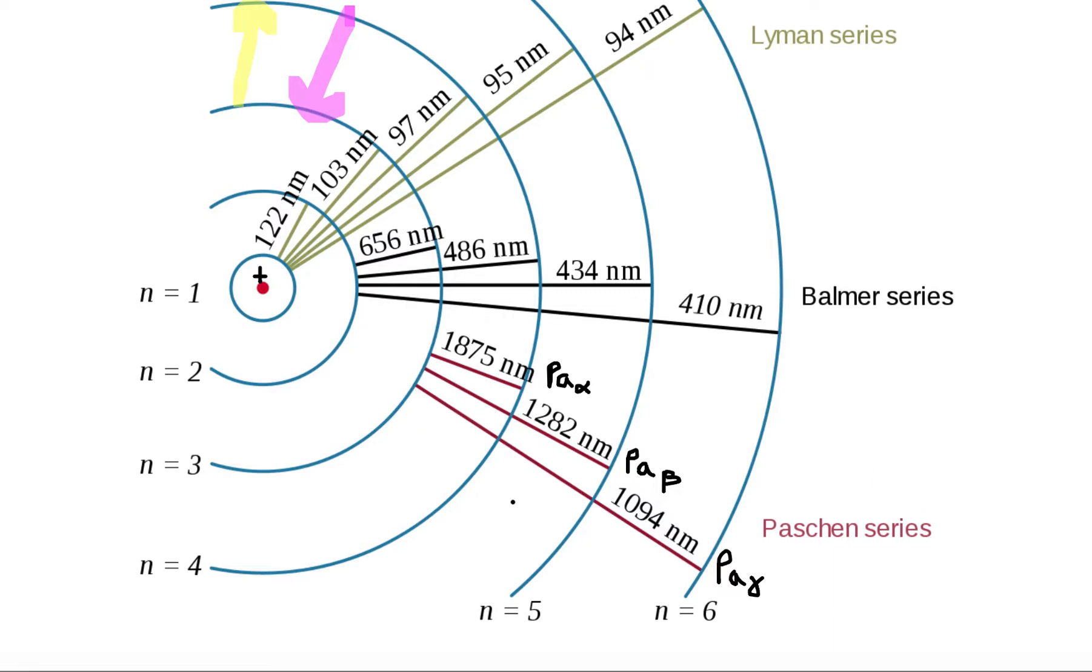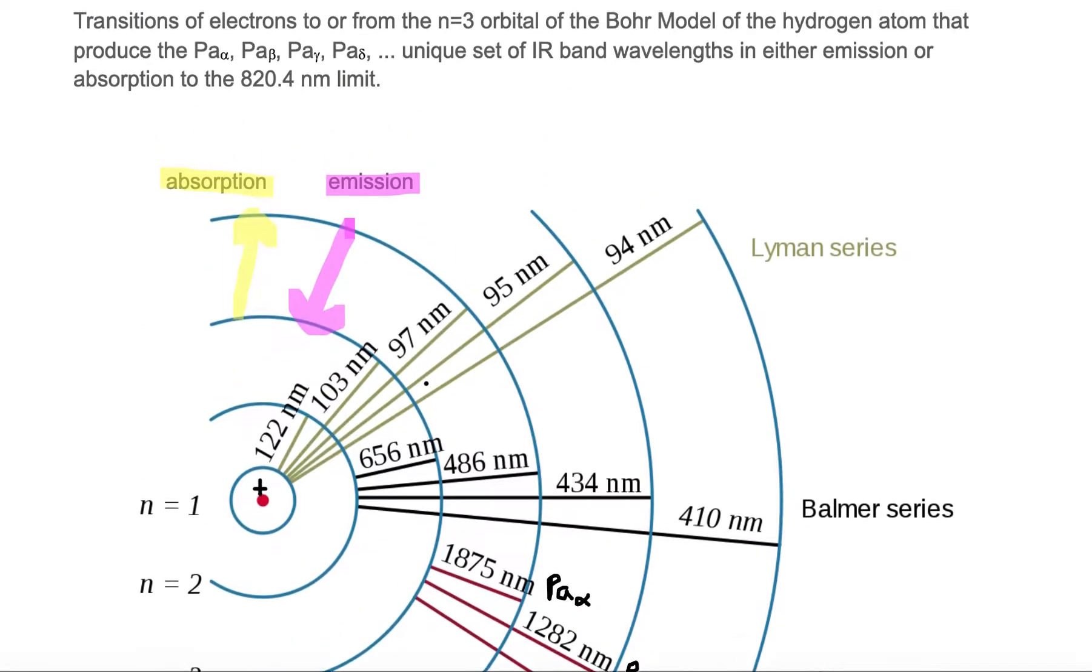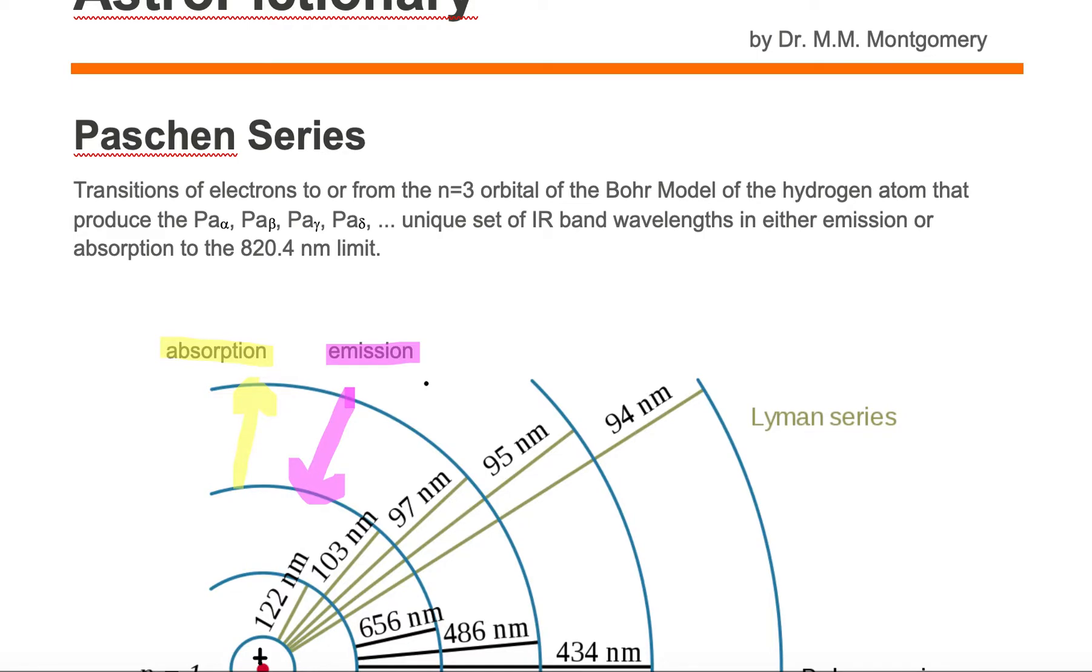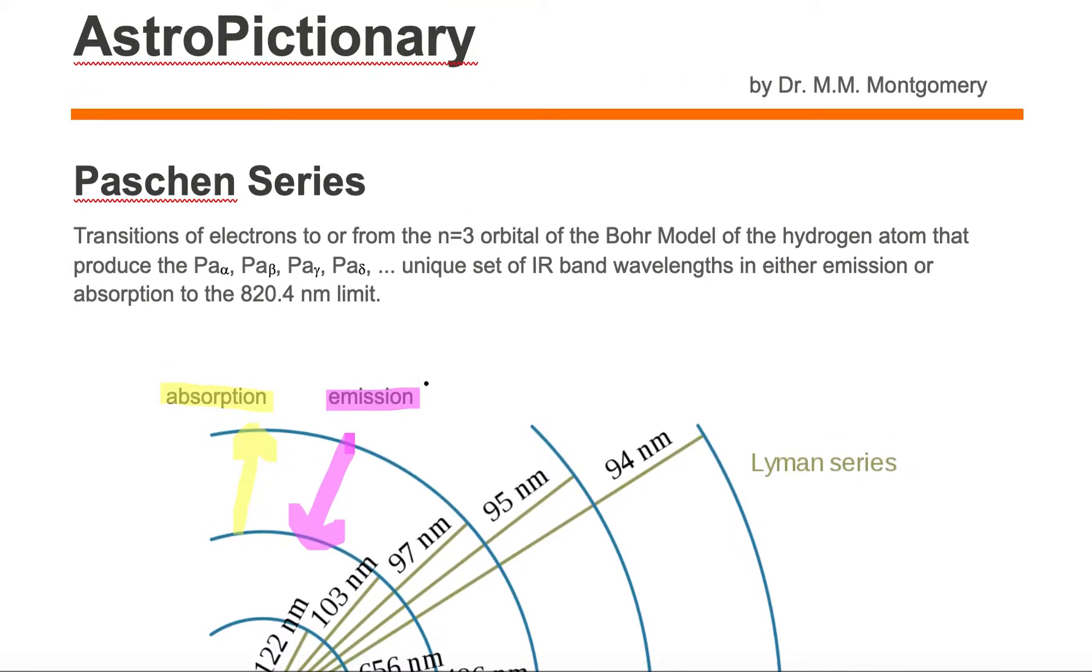This series, where you're making transitions to and from the n equals 3 orbital in the infrared band, is called the Paschen series.